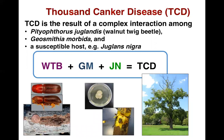Thousand canker disease is a pest complex that's caused the widespread death of walnut species throughout the western U.S. The disease is caused by a weak plant pathogen, Geosmithia morbida, vectored by the walnut twig beetle, Pityophthorus juglandis.